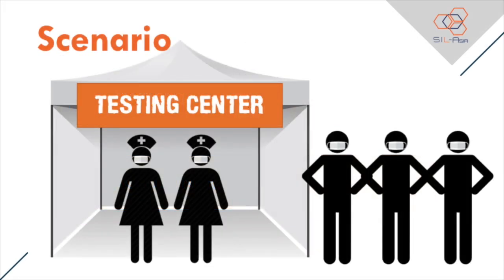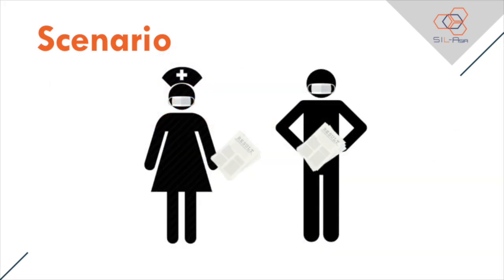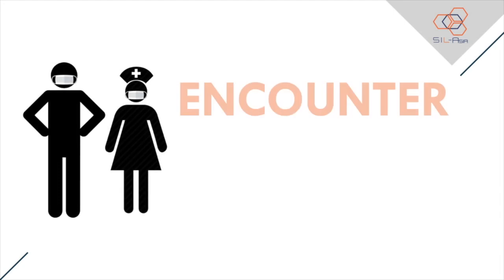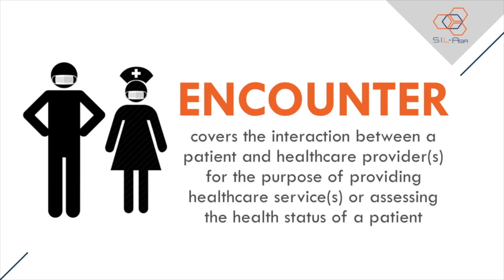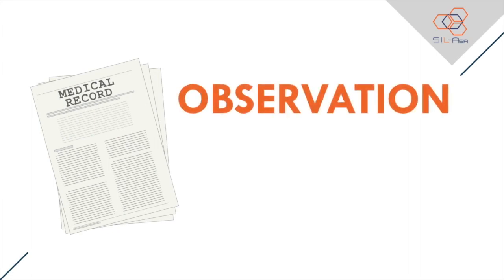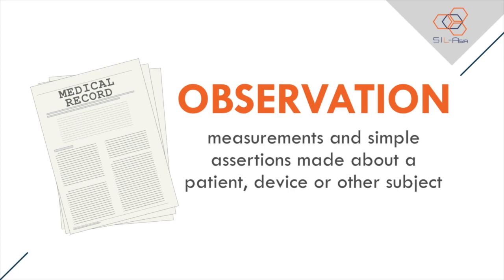Continuing our scenario — Juan and his co-frontliners will go to the testing centre. As they go, their initial assessment will be done via interview or questionnaire, then proceed with the blood extraction for the rapid antibody-based testing. After the procedure and reading of the results, the test result will be handed to the patient. For this part of our scenario, we will look at the encounter resource, which covers the interaction between a patient and healthcare providers for the purpose of providing healthcare services or assessing the health status of a patient. The initial assessment will include the observation resource, which is used for measurements and simple assertions made about a patient, device, or other subject — including vital signs, personal characteristics, or social history.